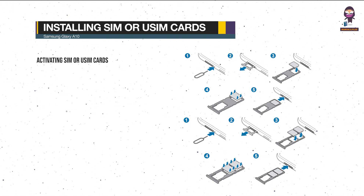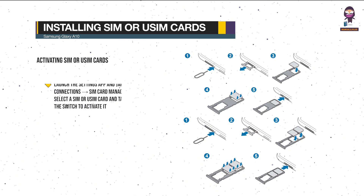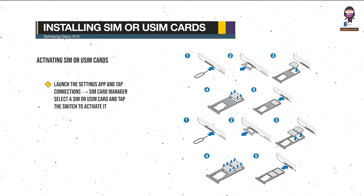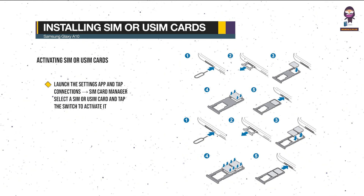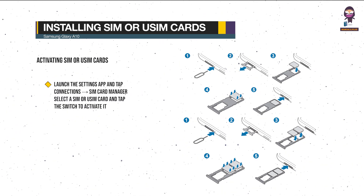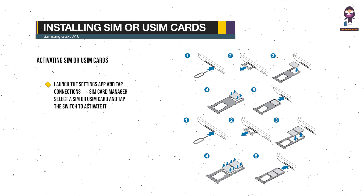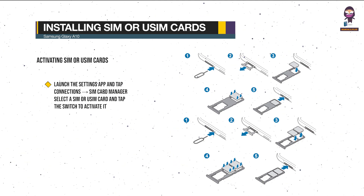Activating SIM or USIM cards: launch the Settings app and tap Connections, then SIM card manager. Select a SIM or USIM card and tap the switch to activate it.